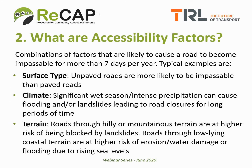Accessibility factors are combinations of factors that are likely to cause a road to become impassable for more than seven days per year. Typical examples are surface type — many rural road networks include a high percentage of unpaved roads which are more likely to be impassable than paved roads. Climate is another big factor where a significant wet season or intense precipitation can cause flooding and landslides leading to road closures for long periods. Finally, terrain is important because roads through hilly or mountainous terrain are at higher risk of being blocked by landslides, while roads through low-lying coastal terrain are at higher risk of erosion, water damage, or flooding due to rising sea levels.